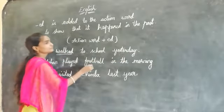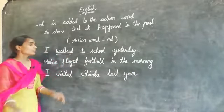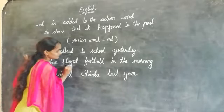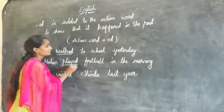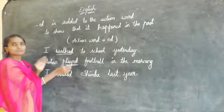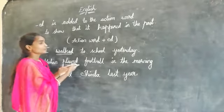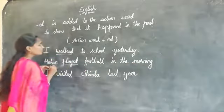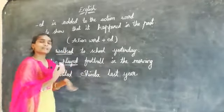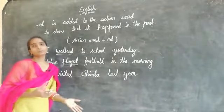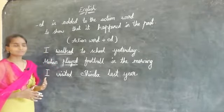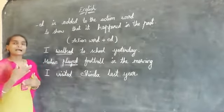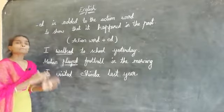Next: Mohan played football in the morning. Children, what is the action word in this sentence? Yes — 'play.' We added '-ed' to 'play' because it already happened in the morning. Mohan played football in the morning — he already played football in the morning. Now it is not morning, so that is why 'Mohan played football in the morning.' This situation already happened — that means it is a past situation.